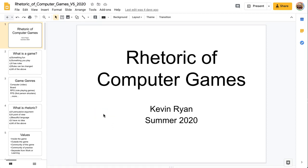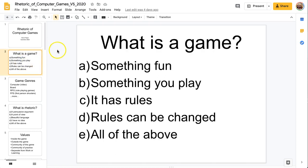Welcome, this is Rhetoric of Computer Games. First of all, I'd like to say what is a game? Now you can see there are five possibilities here, and if you look at all of them, you can see the correct answer is E, all of the above.